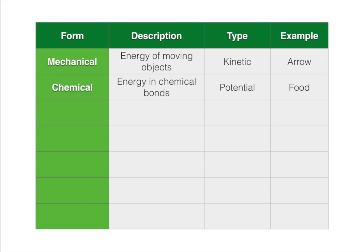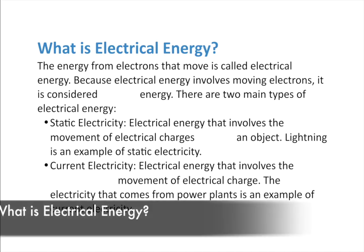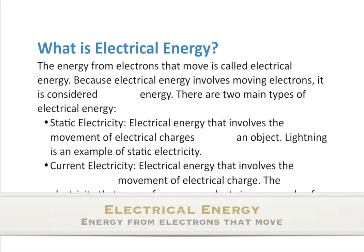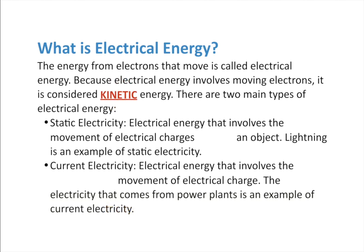The food that we eat is a good example of chemical energy. The next type is electrical energy — the energy that comes from electrons that move. Since it involves moving electrons, it's considered kinetic energy. There are two main types: the first is static electricity, where electrons move within a single object, moving from one end to the other within an object.